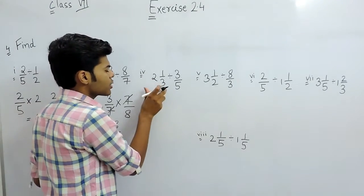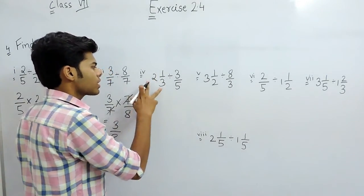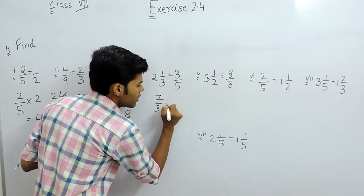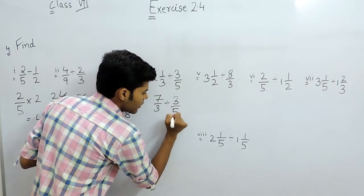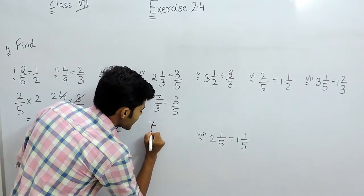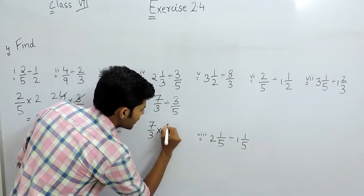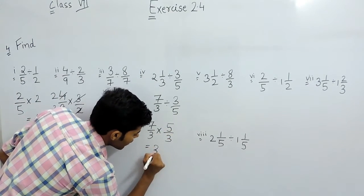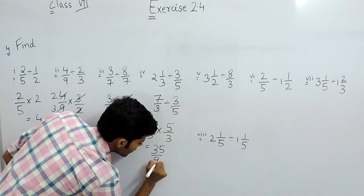Now, first of all we will convert this in an improper fraction, that will be 7 by 3 divided by 3 by 5, then we will write it as 7 by 3 multiplied with 5 by 3 and the answer will be 35 by 9.